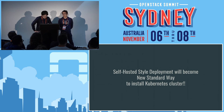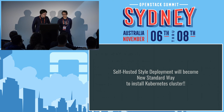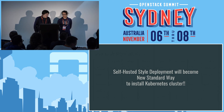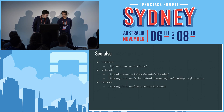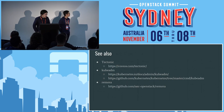Self-hosted deployment has big benefits. Three tools support self-hosted deployment: Tectonic, kubeadm, and Remora. But both self-hosted and OpenStack supported tools are limited. We should deploy Kubernetes with self-hosted for a happy Kubernetes life. We recommend using Remora to make it easy to deploy Kubernetes on OpenStack. Here are the URLs for each of the tools.